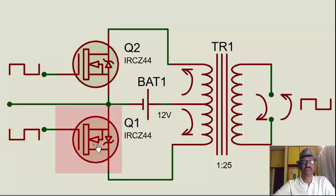So when this is given 10 milliseconds on time, this conducts. The current flows from here through this winding—it cannot go through this diode—it goes through the MOSFET and then back to the negative. This is how the half cycle operates.